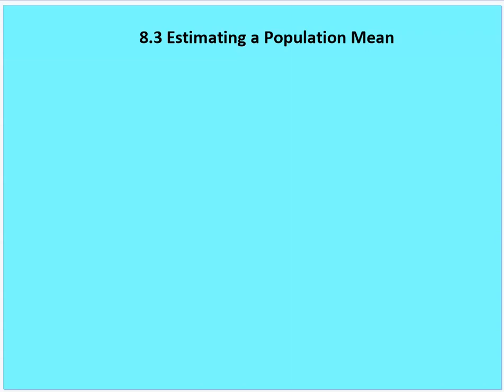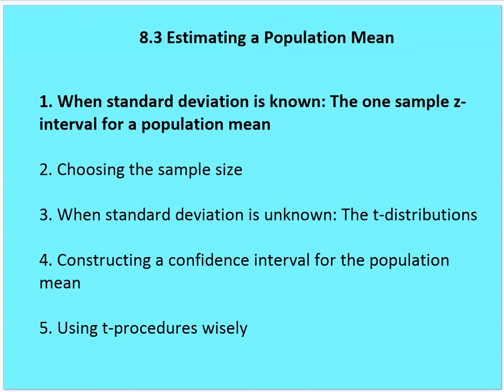As you recall, we talked about confidence intervals — the basics around confidence intervals — and we talked about population proportion. Now we're going to talk about estimating a population mean. Some of this information in terms of the setup for the formulas is very similar to what we've already learned in the first two sections. We're going to talk about when a standard deviation is known: the one-sample Z interval for a population mean. We're going to talk about choosing a sample size using this formula. Then when a standard deviation is unknown, we'll talk about T distributions, constructing a confidence interval for the population mean, and using T procedures wisely.